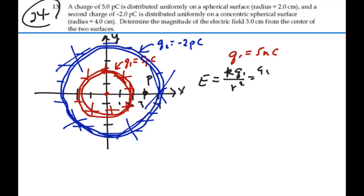This would be 9 times 10 to the 9 times Q1, which is 5 picocoulombs, so 5 times 10 to the minus 12, over, and then if it's acting like a point charge from the center here, our R is going to be the radius to that point, which is 3 centimeters, squared.